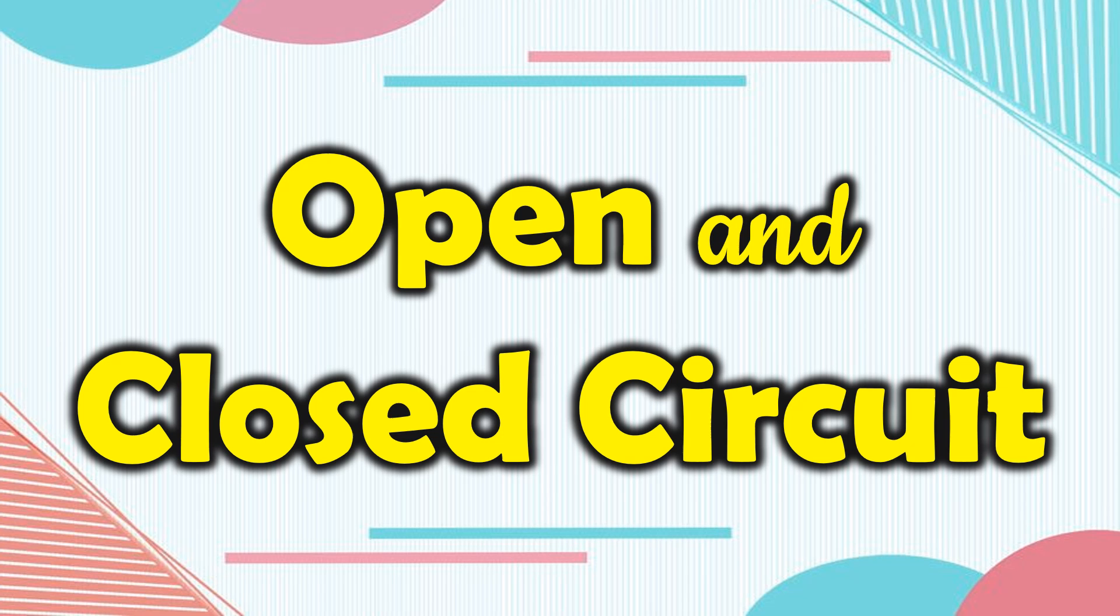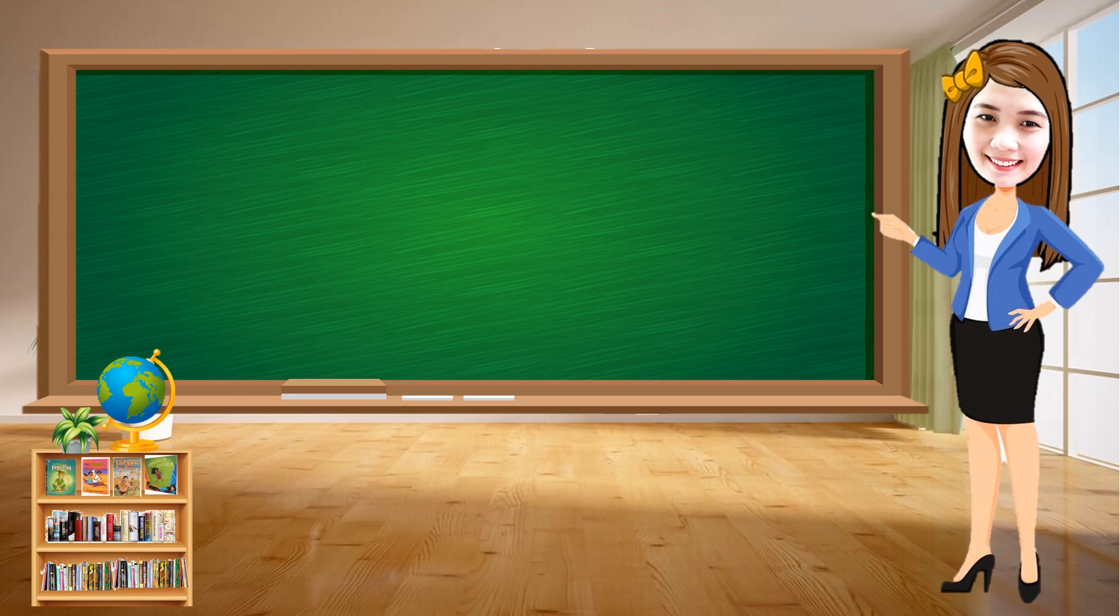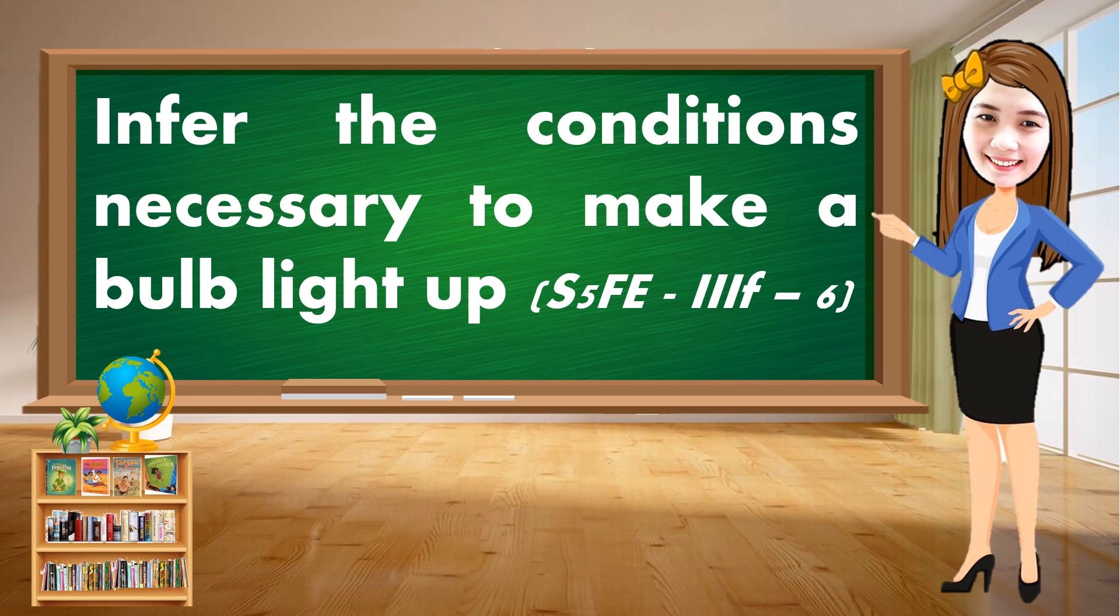Today, we are going to talk about open and closed circuit. At the end of this video lesson, grade 5 learners are expected to infer the conditions necessary to make a bulb light up.